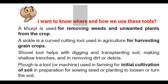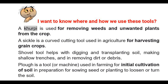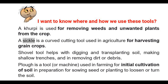I want to know where and how we use these tools. A kofi is used for removing weeds and unwanted plants from the crop. A sickle is a curved cutting tool used in agriculture for harvesting grain crops.